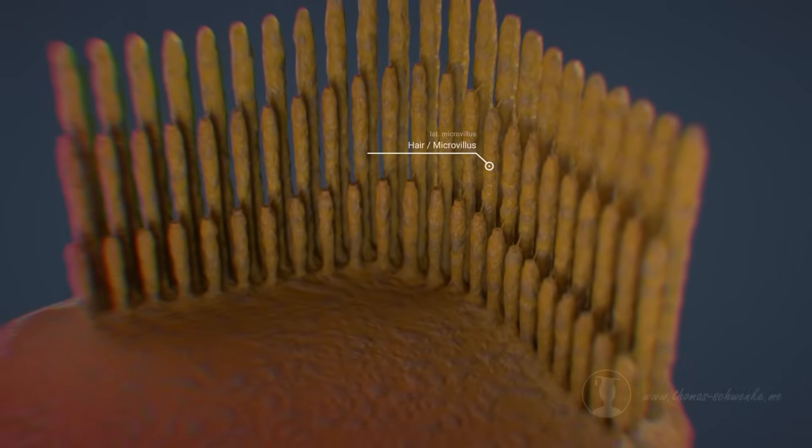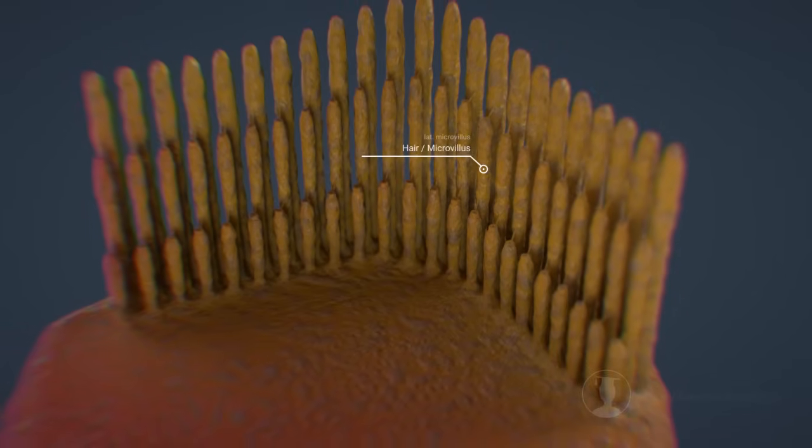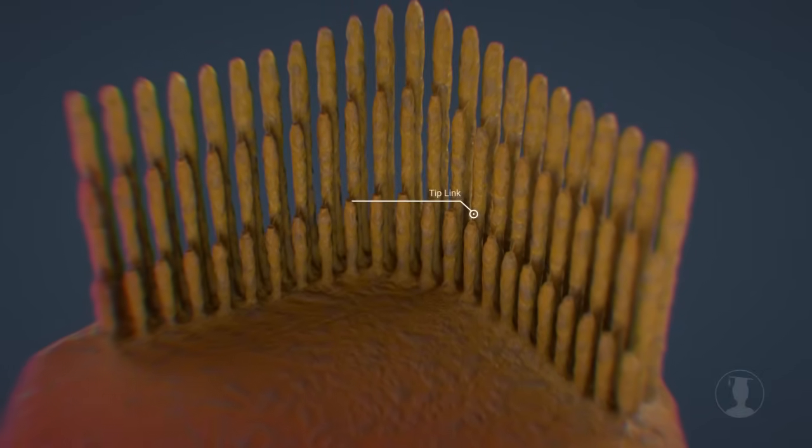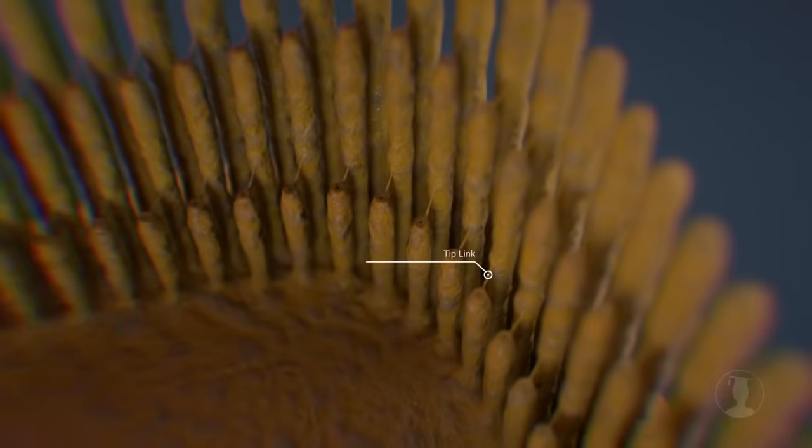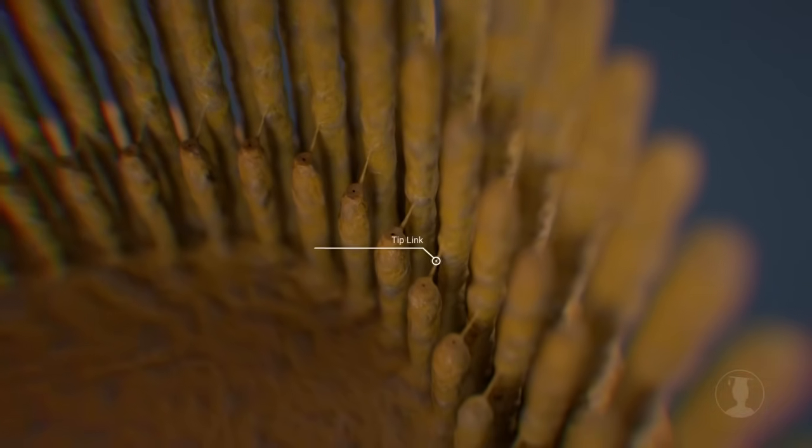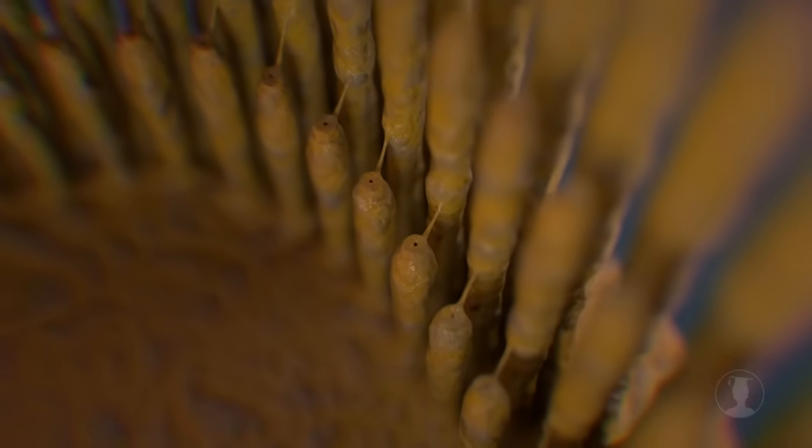The hairs have small bands between them, known as tip links. These bands are attached to a small opening. As soon as a tensile force is applied to these openings, they expand, allowing more K+ ions, which are present in the surrounding fluid, to flow in.